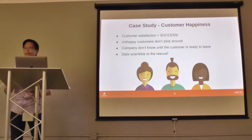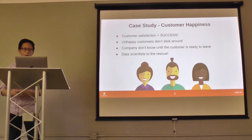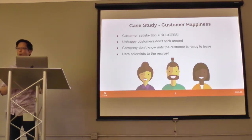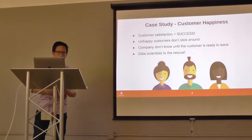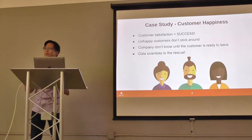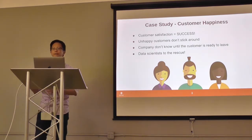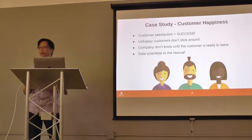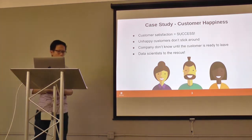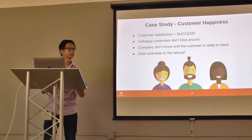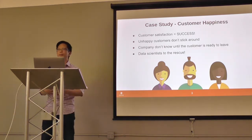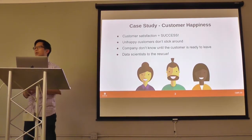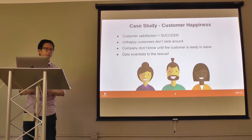One great example is a mailing list or any subscription business model where when the customer clicks unsubscribe, they get an exit interview — why did you leave, can we do better, who are you turning to? But at that point, the customer has already passed the tipping point. That information is useful for the future of the company, but for that particular customer, you've already lost them. This is where a data scientist might come to the rescue — being proactive in mitigating unhappy customers, finding out before they want to leave and taking proactive measures.